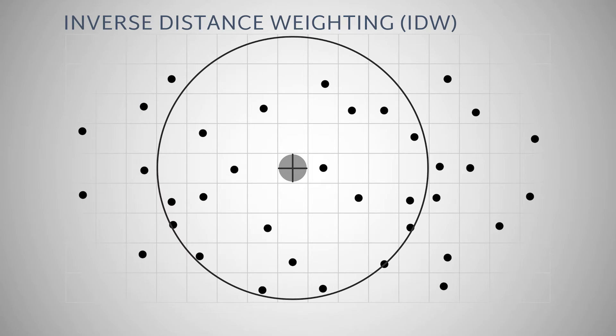The known values are weighted by distance, so the local influence diminishes as it reaches the edge of the search neighborhood.